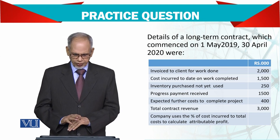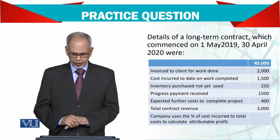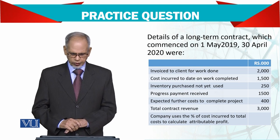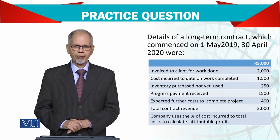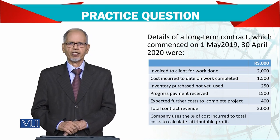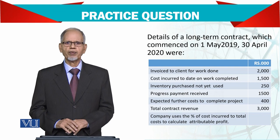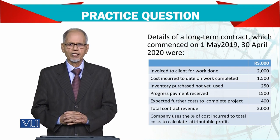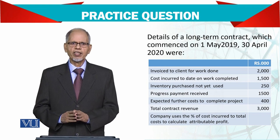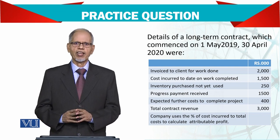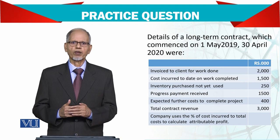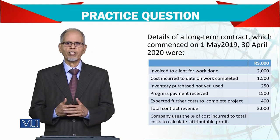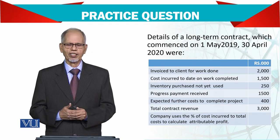The company uses the percentage of cost incurred to total cost to calculate attributable profit. Now, what is the percentage of cost incurred to total cost?